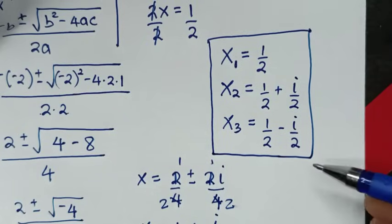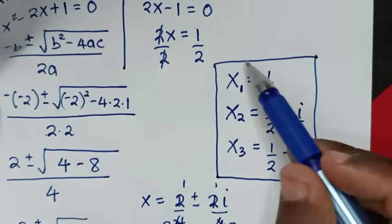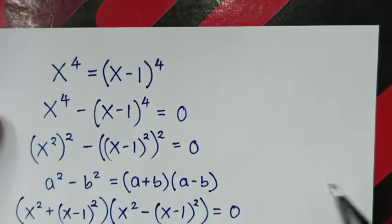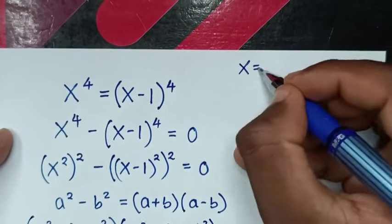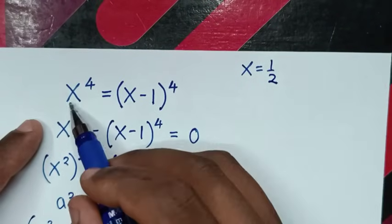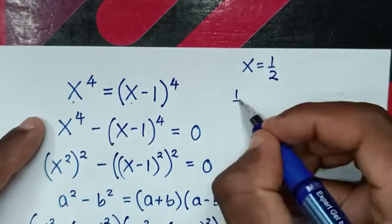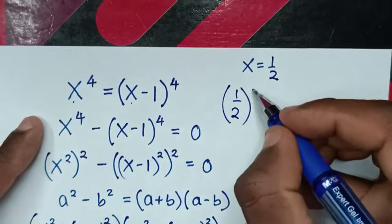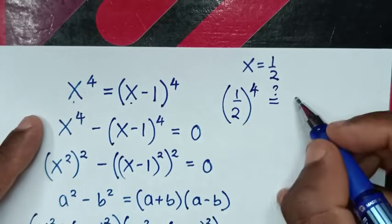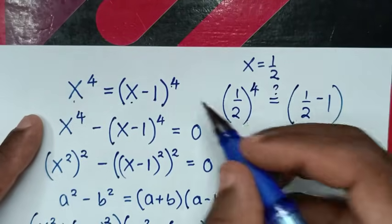Now to check if these values are correct, we verify for the real solution x equals one half. We substitute one half into the original equation. So it will be one half power 4, checking whether it equals one half minus 1, bracket power 4.